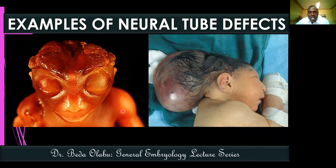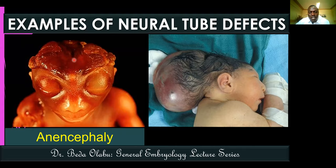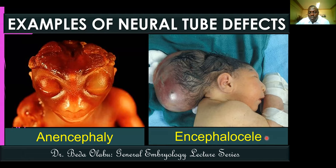Examples of cranial neural tube defects include anencephaly, where the brain has not formed. It occurs as a result of failure of closure of the cranial neuropore, which should close on day 25 - this is perhaps the most severe form of CNS malformation. Another example is encephalocele, where there is a defect in the skull and part of the brain protrudes through it.